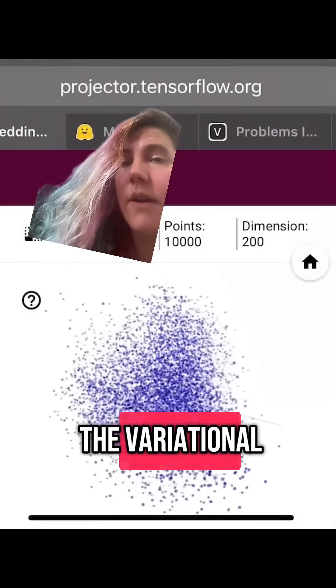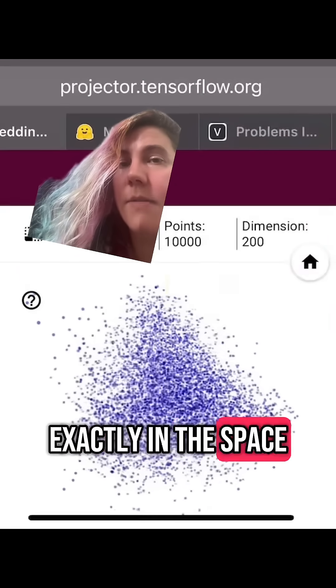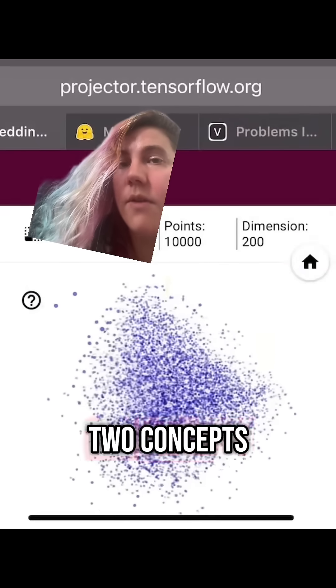What part of the AI does, the variational autoencoder, is it tries to figure out where exactly in the space and exactly how far apart are two concepts.